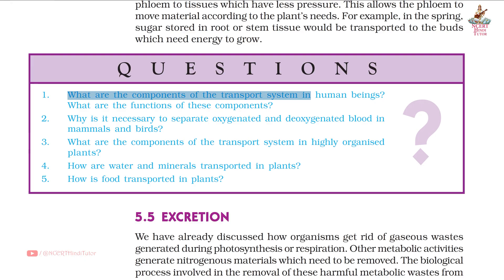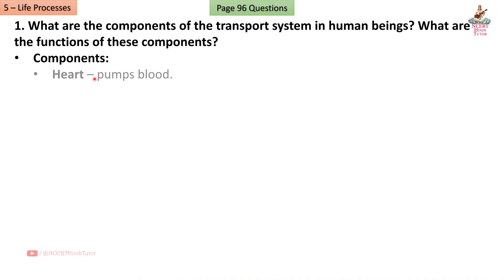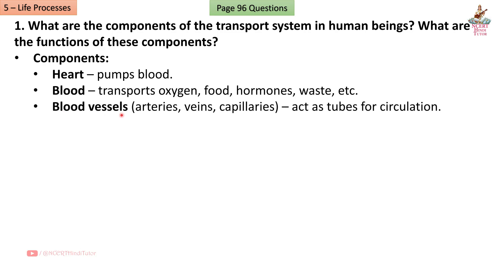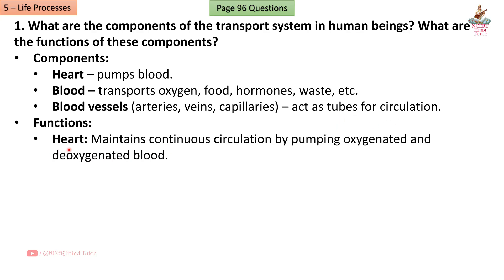Page 96, Question 1: What are the components of the transport system in human beings? What are their functions? Answer: Components — Heart: pumps blood. Blood: transports oxygen, food, hormones, waste, etc. Blood vessels (arteries, veins, capillaries): act as tubes for circulation. Functions — Heart maintains continuous circulation by pumping oxygenated and deoxygenated blood.